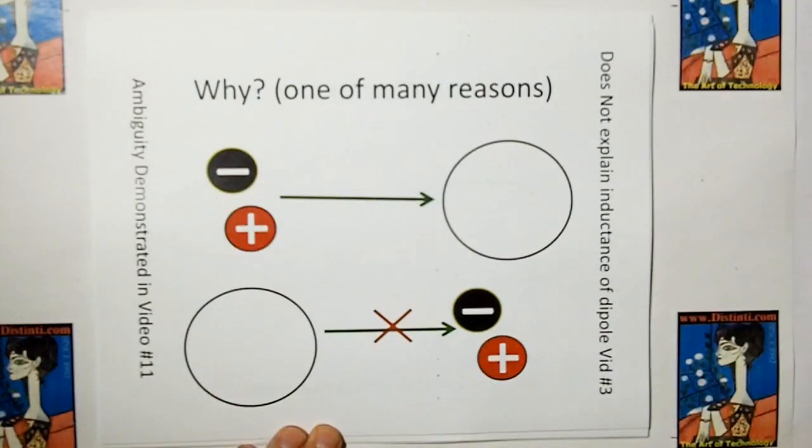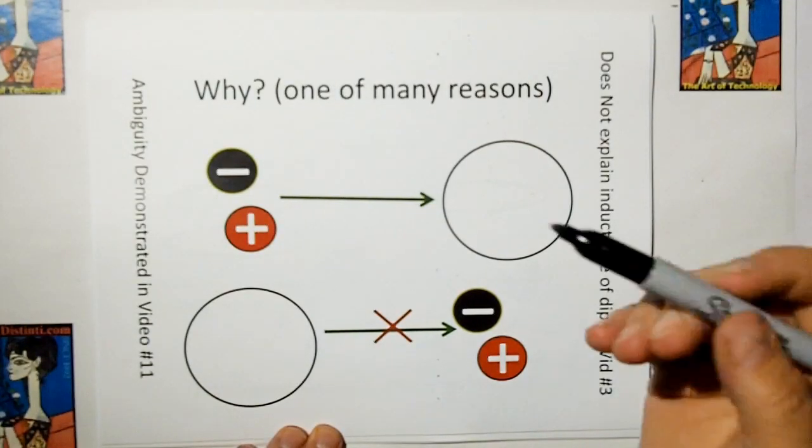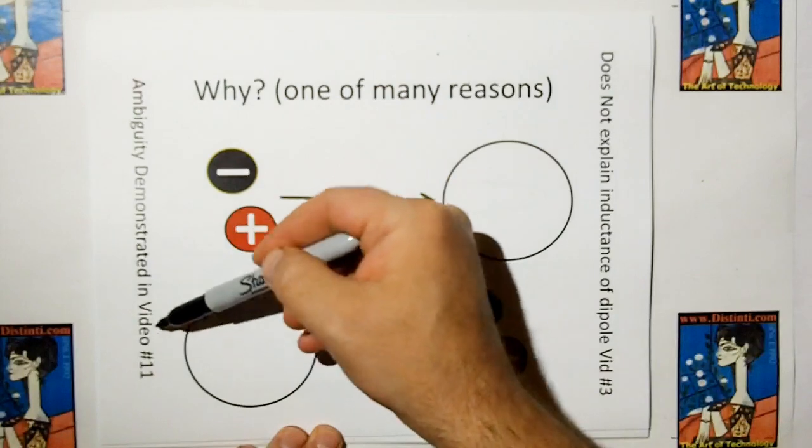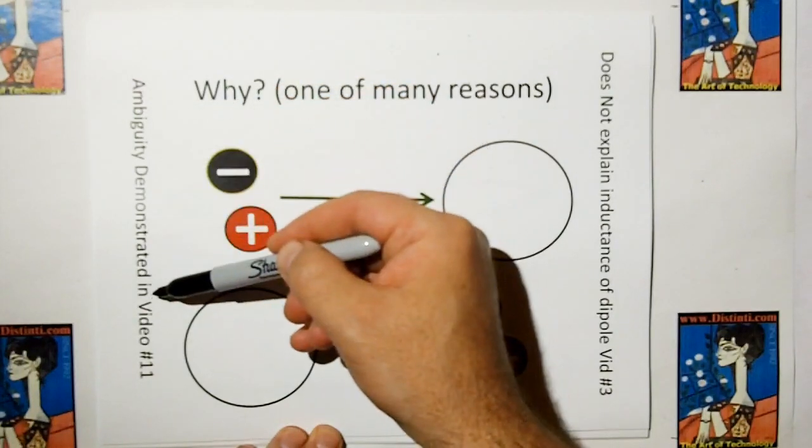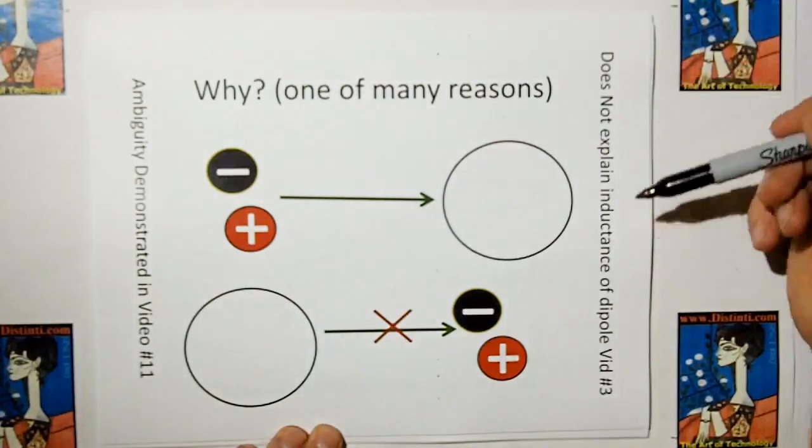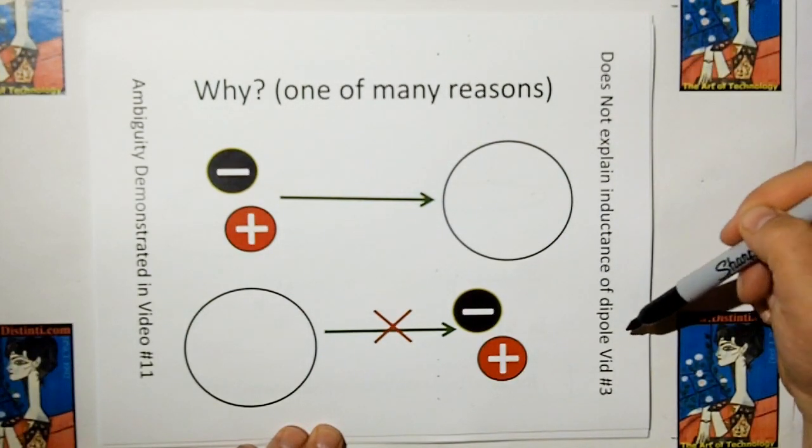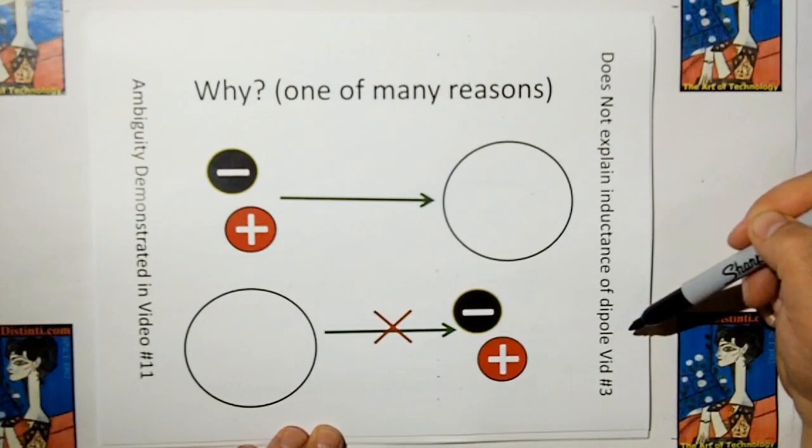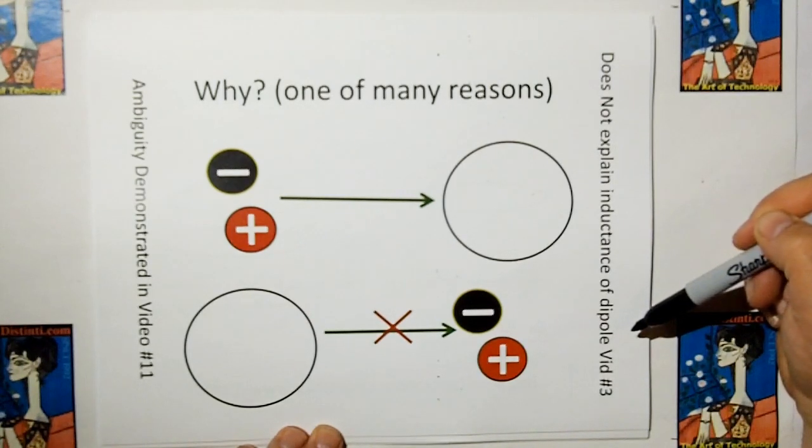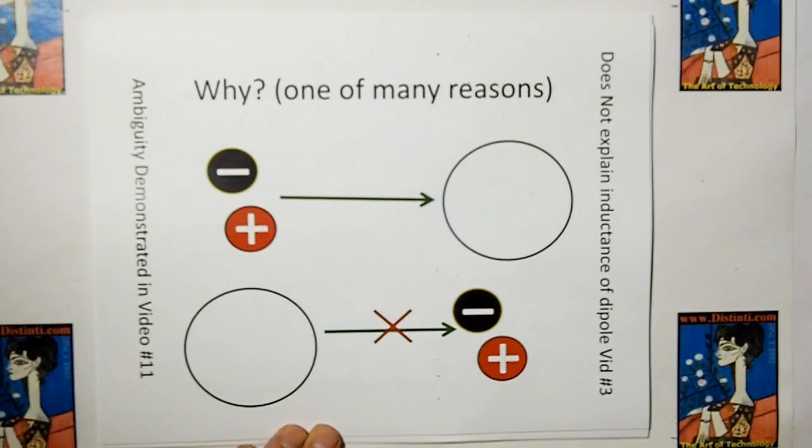But more than that, there's a lot of other problems. If you go and you look on video number 11, I'll show you that Faraday's law is ambiguous. You can't tell what it's going to do at an independent charge. And in video 3, Faraday's law cannot explain the inductance of a dipole antenna, which is a serious problem, because a dipole needs to have inductance to radiate, to be resonant as well.